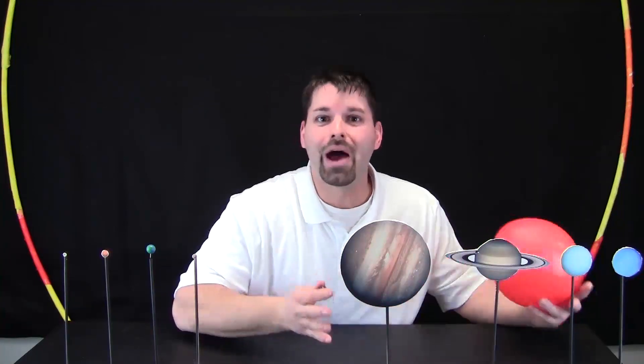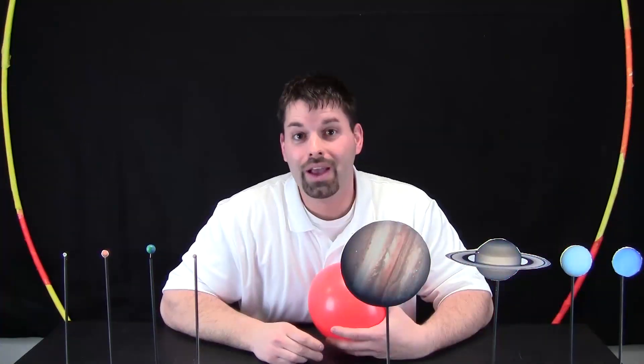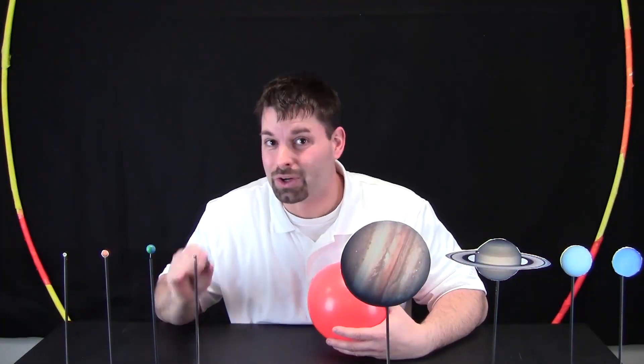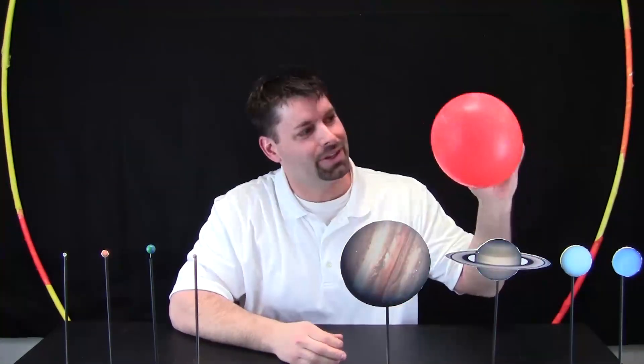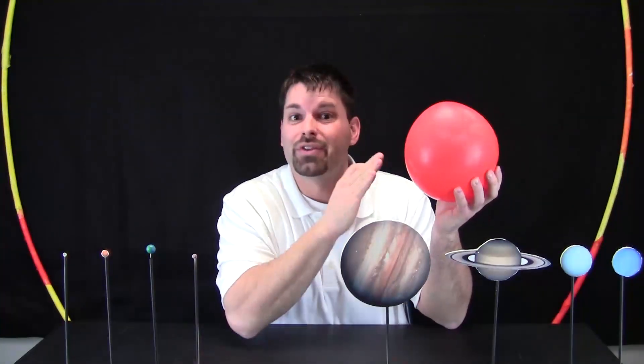So now let us take a look at the four outer planets. Now we said that the four inner planets are made of rock like a rough marble. Well, these four outer planets are made of gas, kind of like a balloon. But at the center is a hard rock middle.